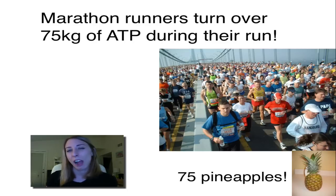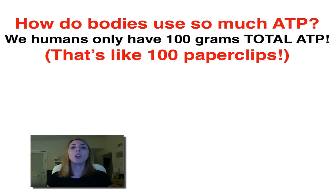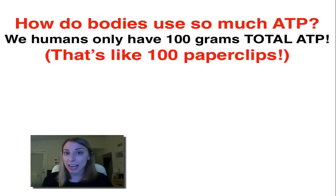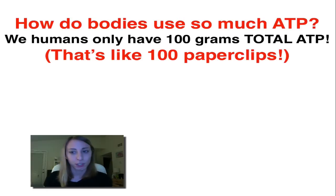So how do we use so much ATP? We humans actually only have a hundred grams total of ATP — a hundred grams. It's actually not that much; it's almost like a hundred paper clips.